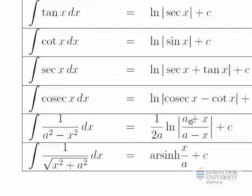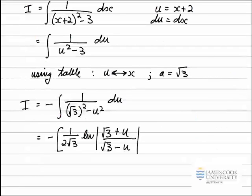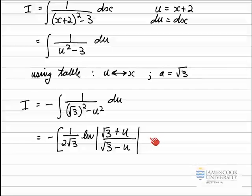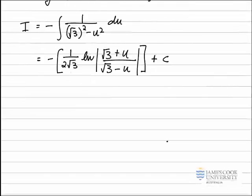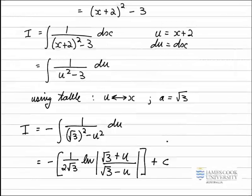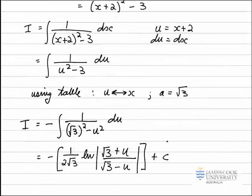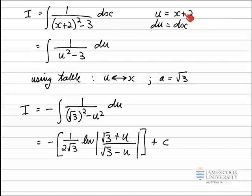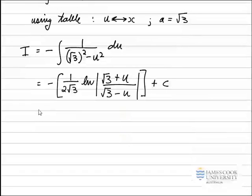Just double check that again: a plus x over a minus x becomes a plus u over a minus u, which is what we've got here. All of this is multiplied by negative 1, and we have plus c — the arbitrary constant — outside the brackets. So that's the end of the integration. The question was given to me in terms of x, so I should substitute back in for u. u is equal to x plus 2, and I can put that in now.